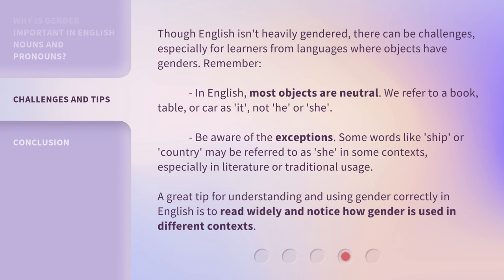Though English isn't heavily gendered, there can be challenges, especially for learners from languages where objects have genders. Remember, in English, most objects are neutral — we refer to a book, table, or car as 'it,' not 'he' or 'she.' Be aware of the exceptions: some words like 'ship' or 'country' may be referred to as 'she' in some contexts, especially in literature or traditional usage. A great tip for understanding and using gender correctly in English is to read widely and notice how gender is used in different contexts.